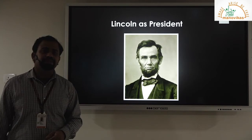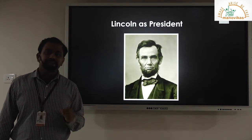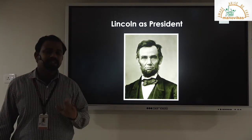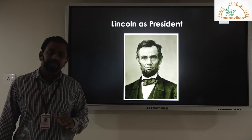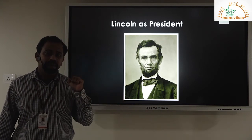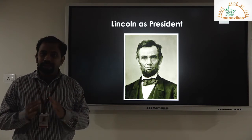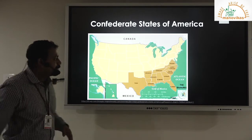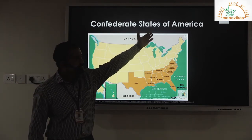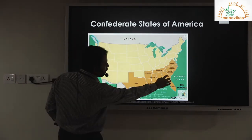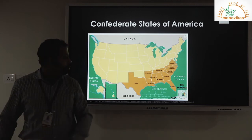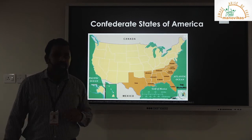One of the greatest advocates of abolitionism was Abraham Lincoln, and in 1861, Abraham Lincoln was elected as the 16th president of the United States of America. When he was elected, the people from the southern states knew that Lincoln would try to push the ideologies of abolitionists and ban slavery. So they separated themselves from the United States of America and formed a new country — the Confederate States of America — with South Carolina being the first state to secede.